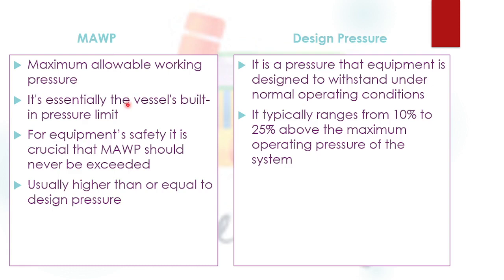When an engineer designs equipment, he sets the design pressure about 10 to 15 percent higher than the normal maximum operating pressure that occurs in the process. For example, if the normal maximum operating pressure is 100 psig, a designer would set the design pressure to about 110 or 125 psig.